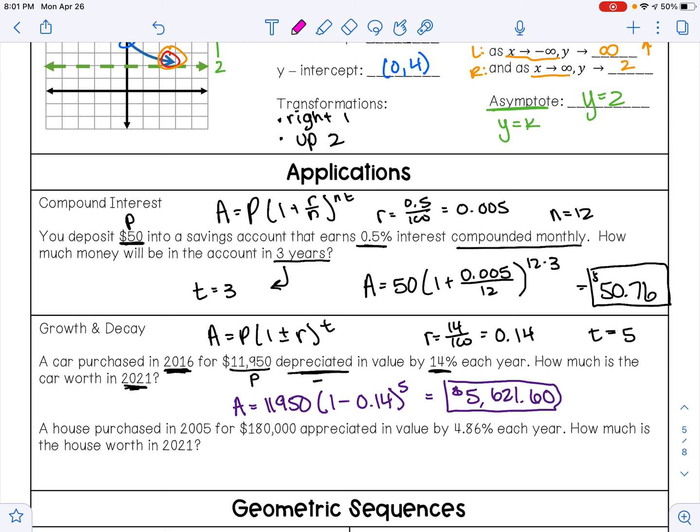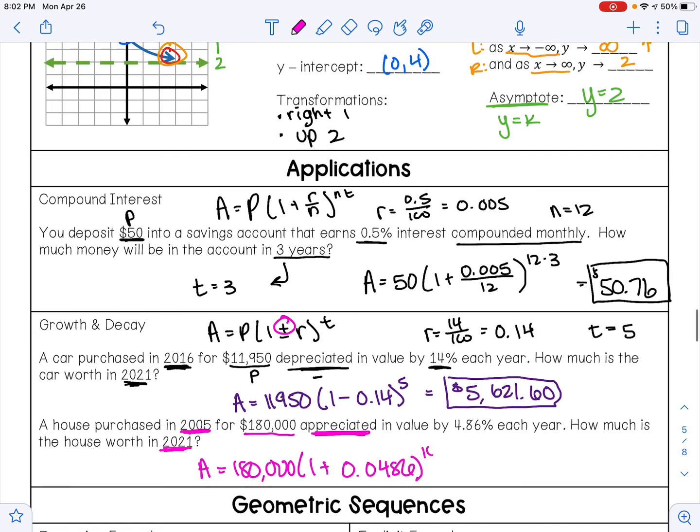We're going to do the same exact thing that we just did on this last problem. The $180,000 is my P value. This is appreciating, so this is going up, so that's when I'm going to use the plus sign. 4.86% converted out of a percentage is 0.0486. And then between 2005 and 2021, that is 16 years.